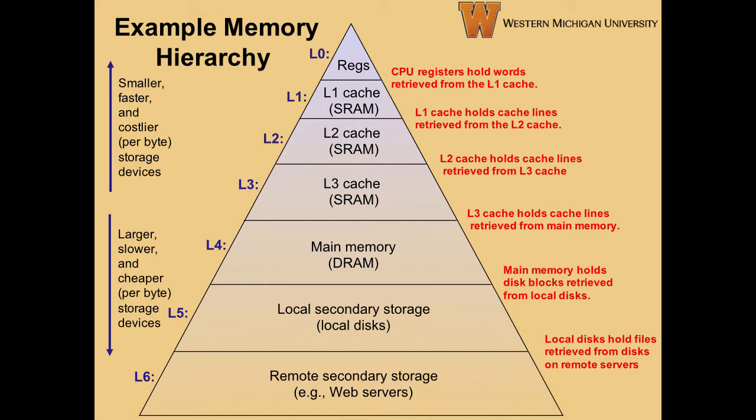Information needed by the CPU registers is retrieved from level 1 cache if it's there. If not, we continue down the pyramid. Level 1 cache retrieves data from level 2 cache, which retrieves data from level 3 cache. After that we dip into main memory, which is much larger than cache memories, and because of the costs involved we move from static RAM to dynamic RAM to support the increased size in a cost-effective way. After that we get to local storage devices such as hard disk drives and solid-state drives, and finally if we need data that does not reside on the local device at all, we could go out to remote storage devices like web servers.